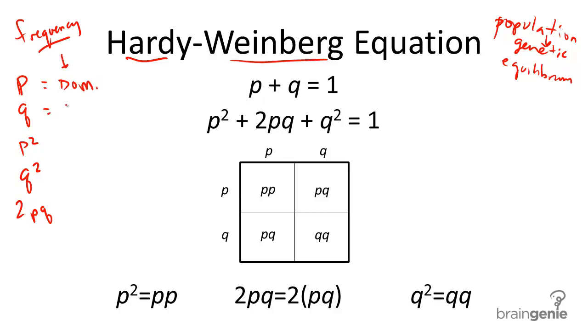Little q is the frequency of the recessive allele. So, the p squared, as you can see down here with 2 little p's, is a homozygous dominant individual.